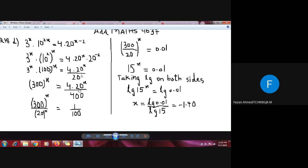Now I have to bring all the x on one side. 20 to the power x is being multiplied on this side, so I shift it to the other side and it gets divided: 300 to the power x upon 20 to the power x equals 4 upon 400, which reduces to 1 upon 100.